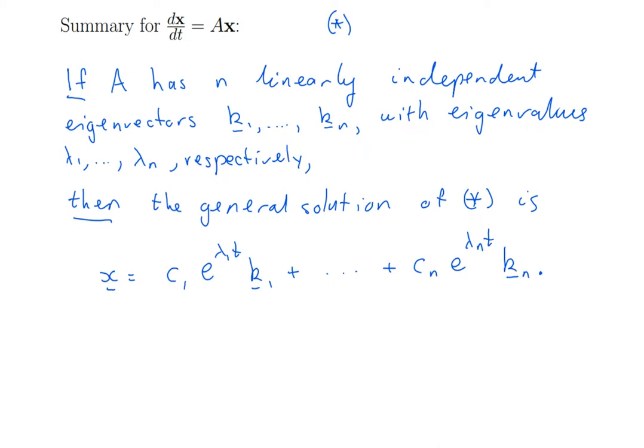Now, when you add up all these vectors that are all pointing in different directions and are all growing or decaying at different rates, then, of course, the whole solution could be quite complicated. But, conceptually, this is pretty nice. Now, not all matrices do have n linearly independent eigenvectors. If they don't, you could still form the linear combination and get some solutions, but you just wouldn't get all of them.